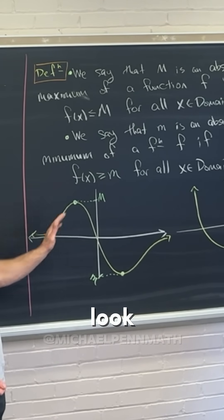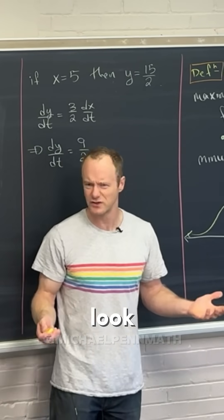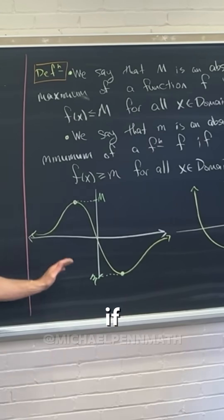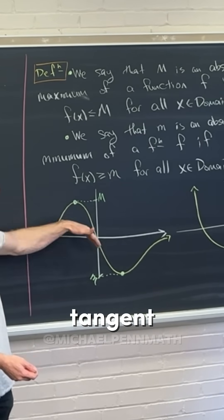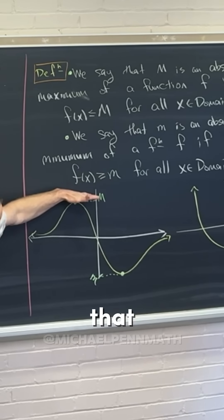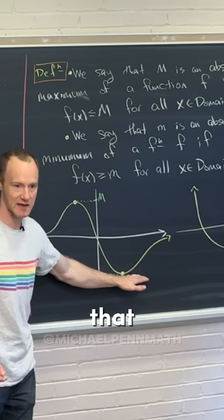But interestingly enough, if you were to look at the derivative - because why would you look at the derivative? Well, that's what we're studying right now. So if you were to look at the derivative, which is the slope of the tangent, what's the slope of the tangent at that maximum? And then what's the slope of the tangent at that minimum?